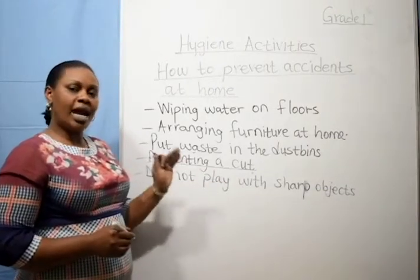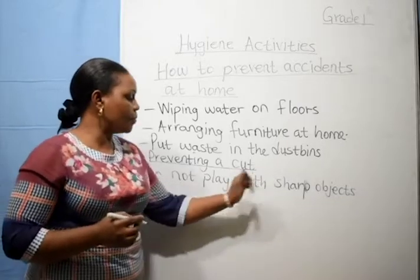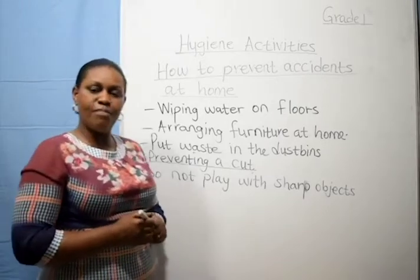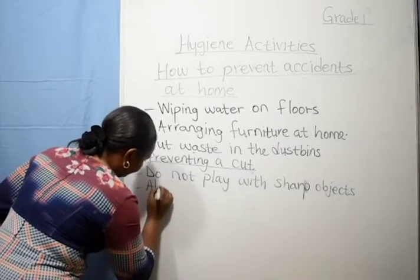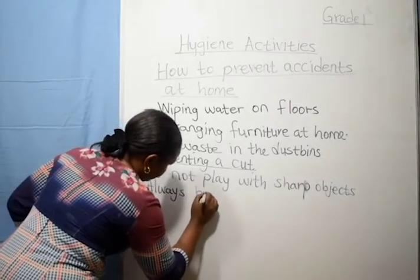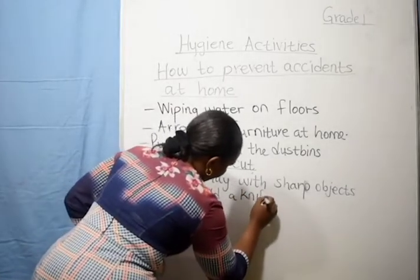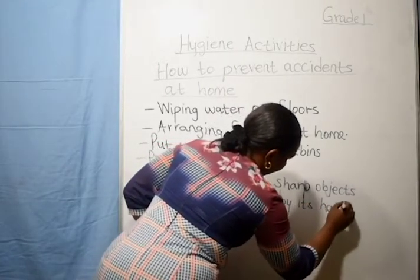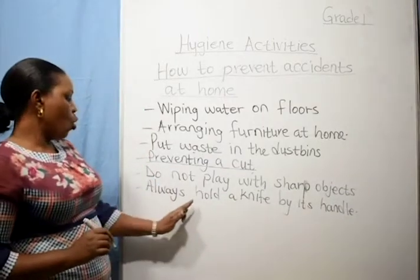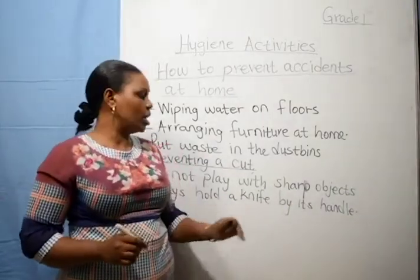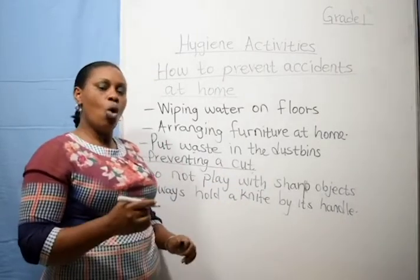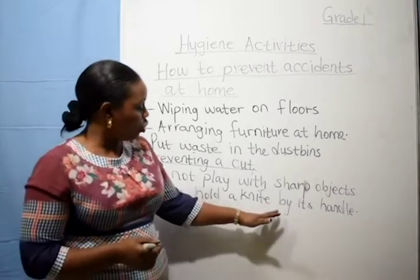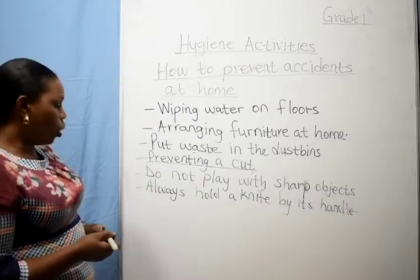Because when you play with sharp objects, you can cut yourself. At home, you are not supposed to play with a sharp object like a knife. Always, when you are holding a knife, you are supposed to hold a knife by its handle. When you want to use a knife, make sure you hold it by its handle so that you cannot be cut by the knife or sharp object.